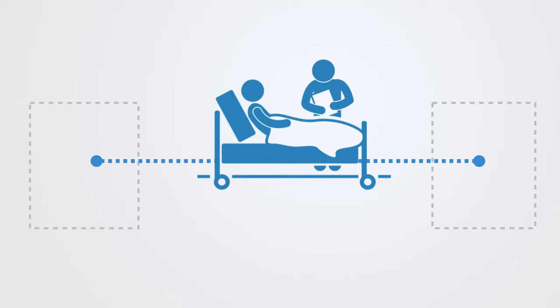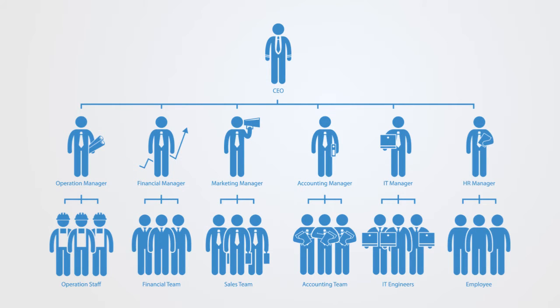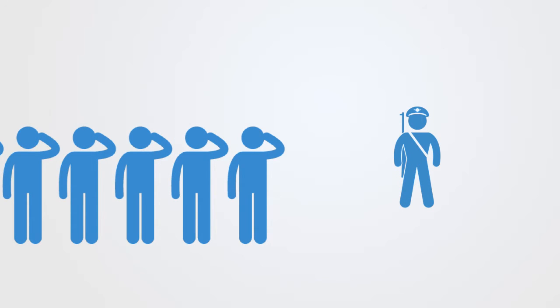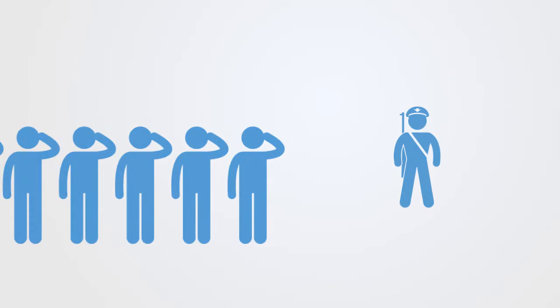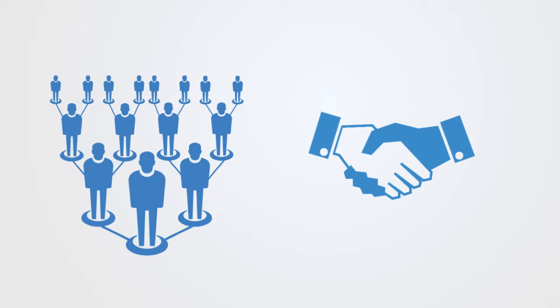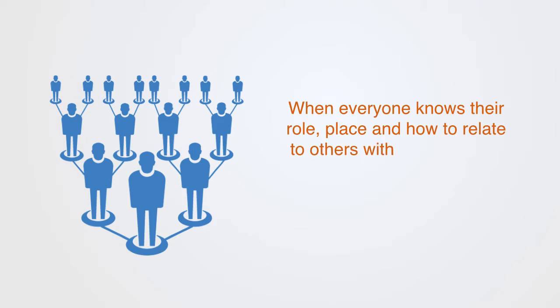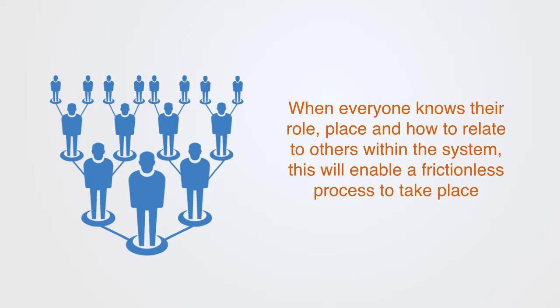In order to coordinate activity around some common function, we need not only roles but some set of relations between these roles that define how they interrelate. Doctors and patients, students and teachers know how they should interrelate in order to enable the joint outcome. In large social systems we have organizational charts that define how the different positions relate to each other. The primary objective here is to automate the interaction between the agents so that it does not have to be renegotiated each time. When everyone knows their role, place and how to relate to others within the system, this will enable a frictionless process to take place.